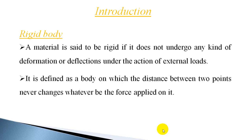A material is said to be rigid when it does not undergo any kind of deformation or deflection under the action of external loads. Whatever amount of external loads acts on the material, it is not producing any kind of deformations in the form of deflections, reduction in length, increasing length, buckling or twisting. If no deformation is produced by the external forces, then you can say the body is rigid.